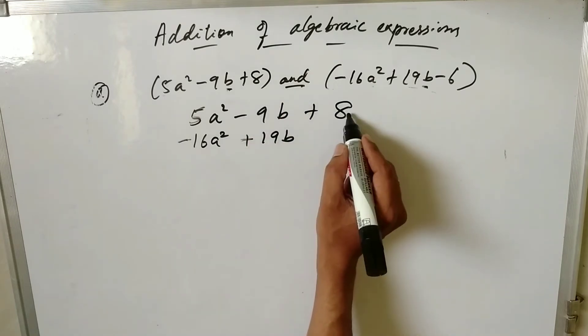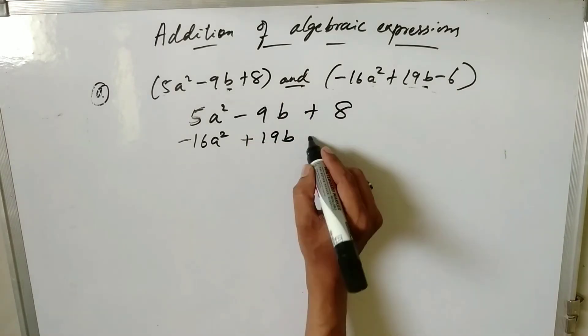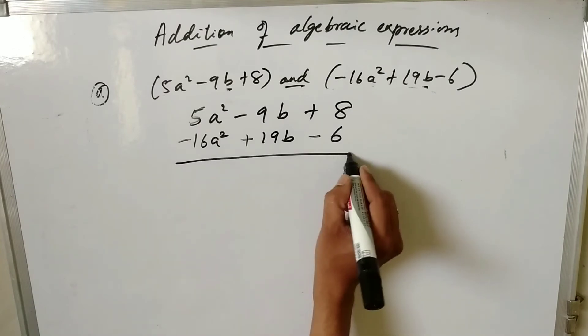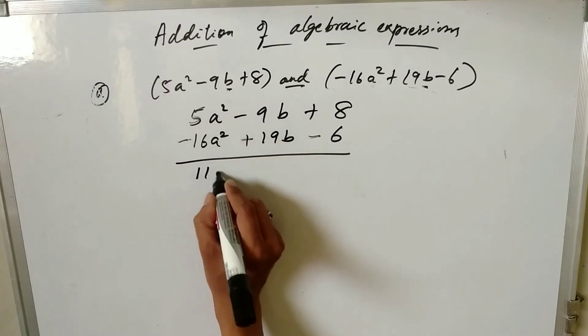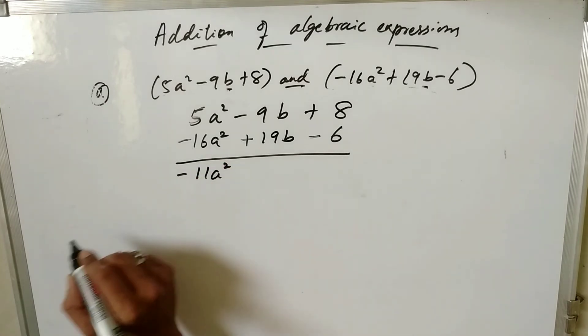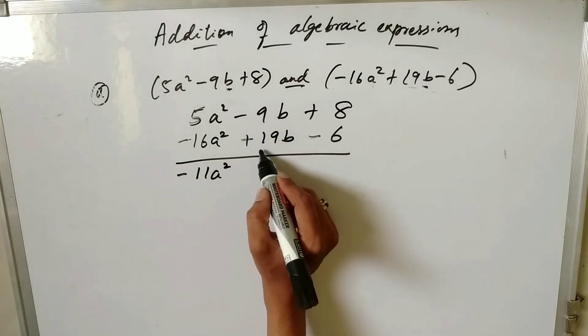So you need to write the constant here, which is -6. Now add these terms: 5 - 16 = -11a². The greater number has a minus sign. Then -9 + 19 = +10b because the greater number has a plus sign.